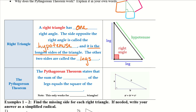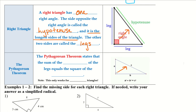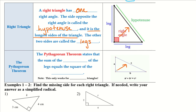Knowing which side is the hypotenuse is important. The right angle is always opposite the hypotenuse. For all triangles, if that helps, we can draw a cross opposite from the right angle. The Pythagorean theorem states that the sum of the squares of the legs equals the square of the hypotenuse.